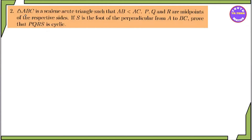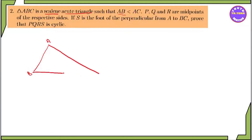Triangle ABC is an isosceles triangle. As you can see, the triangle is isosceles, which means AB is less than AC. So the triangle is ABC, with AB less than AC.